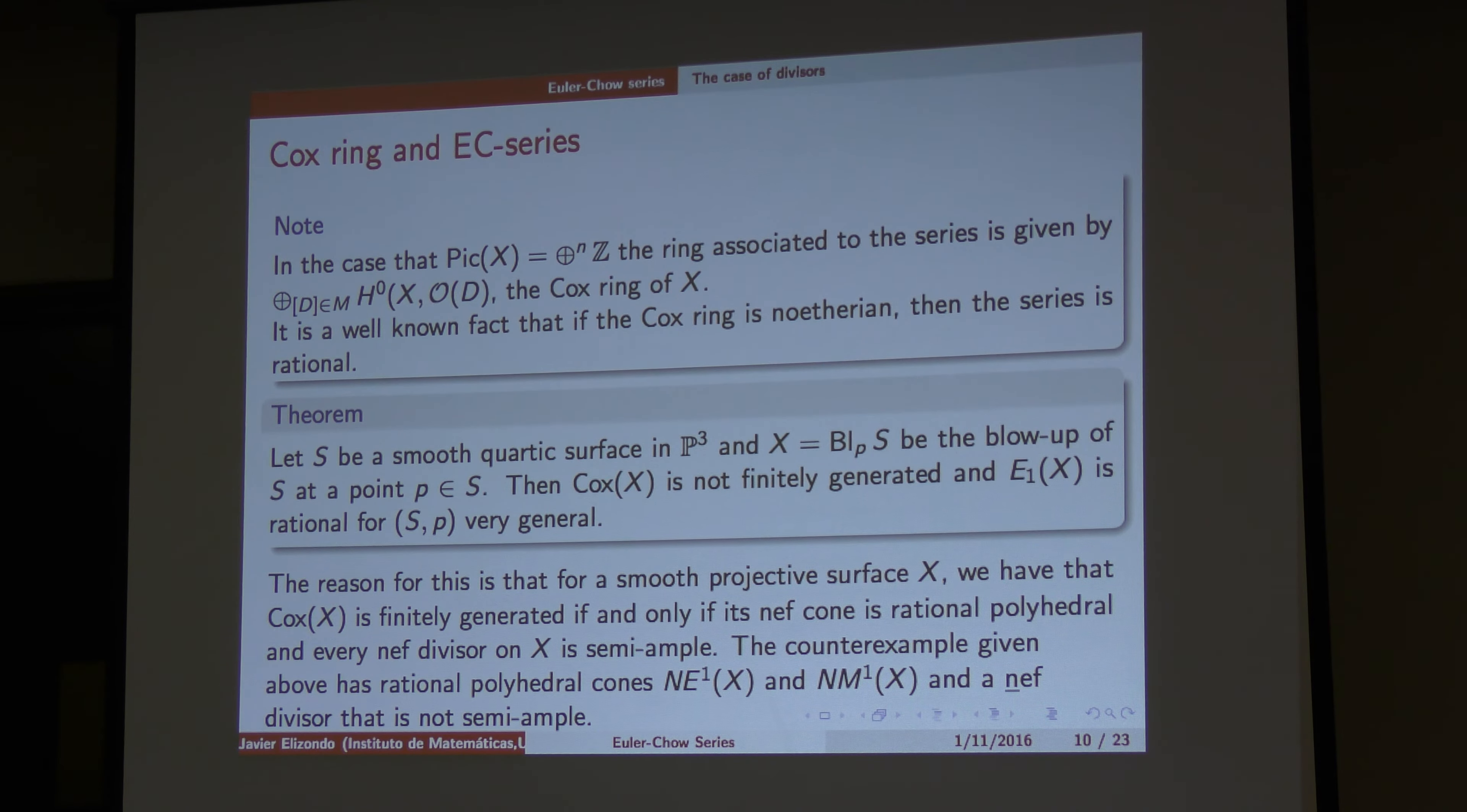I mean, the main reason is, it's coming from Mori, from the work of Sean Keel about Mori Dream spaces. So, for a smooth projective surface, you have the space is Mori Dream, in particular, the Cox ring is finitely generated. If only something happened with the cones of effective divisors. You need all these ones to be semi-ample.